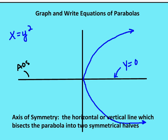For an equation where x has the exponent of one and y has the exponent of two, the axis of symmetry still bisects the parabola, but instead of x equals zero, in this case it's y equals zero. The axis of symmetry will change based on the orientation of the parabola — in some cases it will be a vertical axis of symmetry, and in some cases it will be a horizontal axis of symmetry.